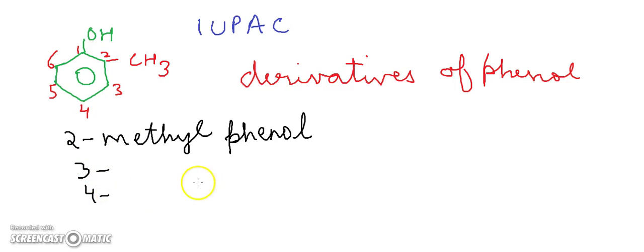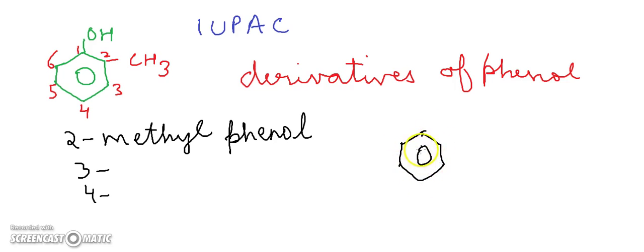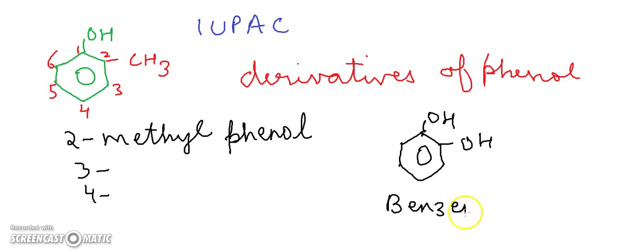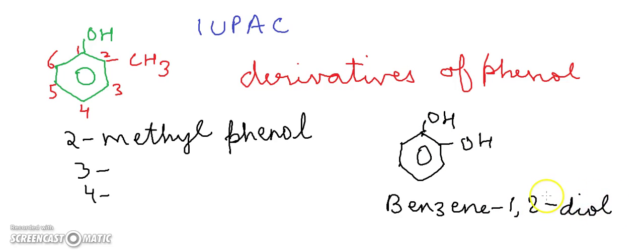Now if you have a compound like a phenol ring where OH is a substituent, the name starts with benzene as the parent ring. Since we have the OH group present on the first and second positions, the name becomes benzene-1,2-diol.